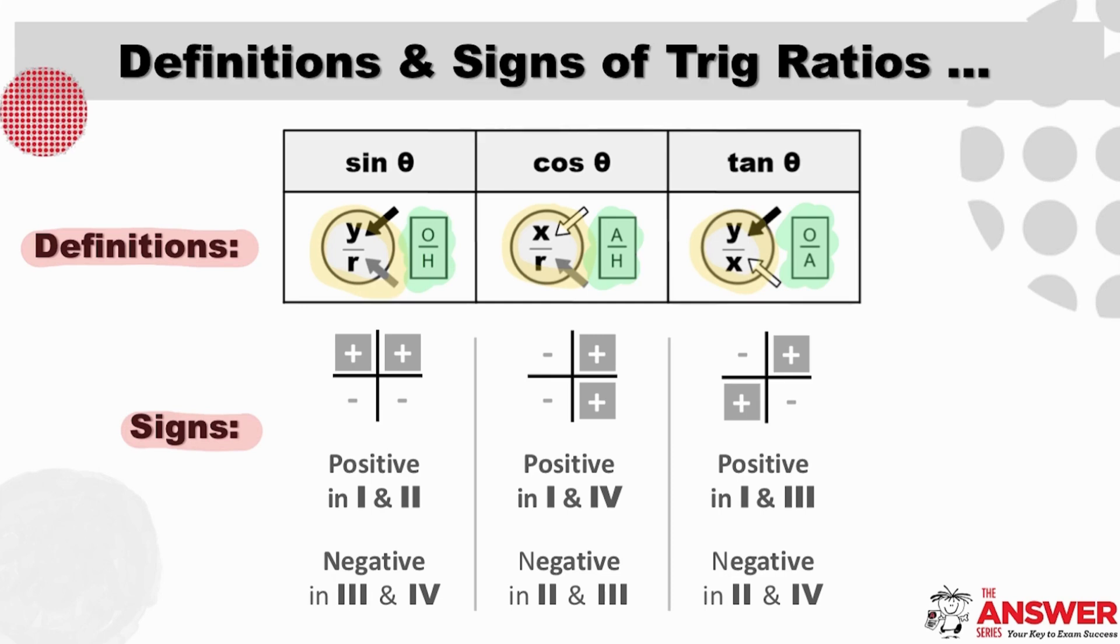Sine is positive therefore where Y is positive and negative where Y is negative. If we look at cos, which is X over R, it is positive where X is positive and negative where X is negative.